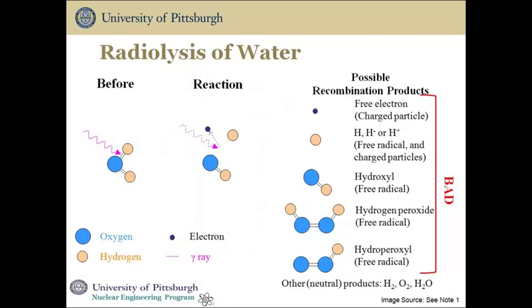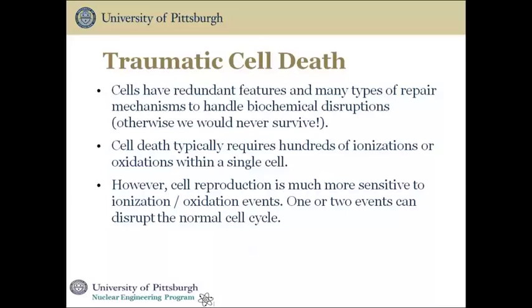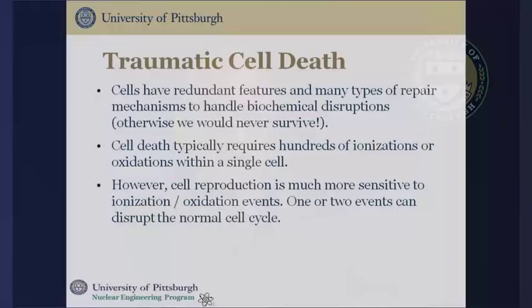It's generally held that cell disruptions cause cancer, but let's keep some perspective. Cells have repair mechanisms, and cell disruptions occur from many causes — ultraviolet light, sunburn, stress, chemicals, tobacco products, and viruses. Cell death typically requires hundreds of ionizations or oxidations within a single cell. Cells have a tremendous ability to repair damage, so not all radiation effects are fatal to the cell. In many instances, cells are able to completely repair any damage and function normally. If the damage is severe enough, the affected cell dies.